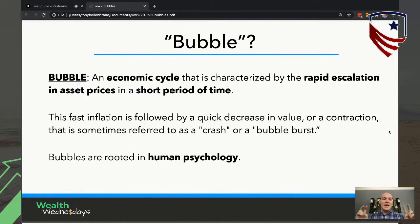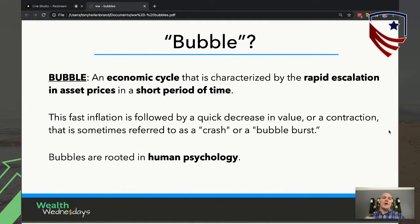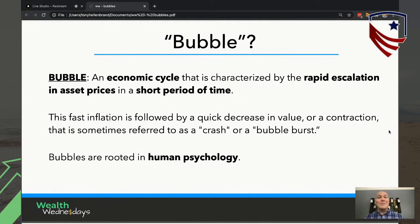So first off, a bubble — the idea of a bubble. A bubble is an economic cycle, and it's characterized by rapid escalation in the price of something in a short period of time. It's a cycle, meaning there's been a long history of bubbles. The rapid escalation is really key, and it also has to happen really quickly. The fast inflation is followed by a quick decrease in value or a contraction — that's sometimes referred to as the bubble popping, bursting, or a crash.